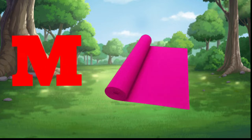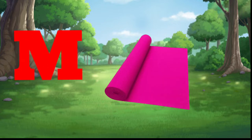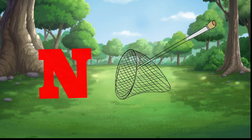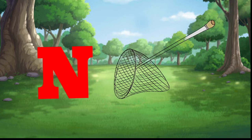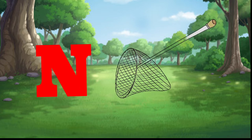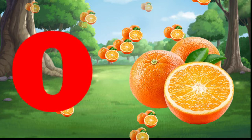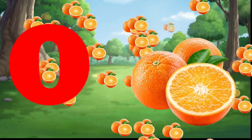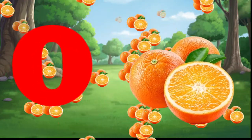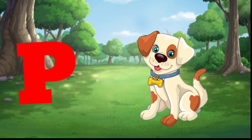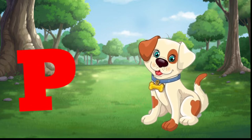M is for mat, m-m-mat. N is for net, n-n-net. O is for orange, o-o-orange. P is for pet, p-p-pet.